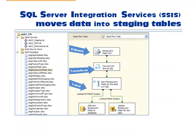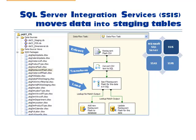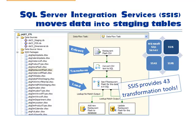To move data, we extract it from the source, transform it as needed to match other data, then load the data into the tables we created. SQL Server Integration Services has all the tools needed to extract, transform, and load the Cypress Quay staging tables.